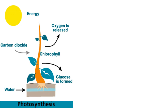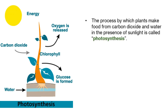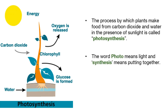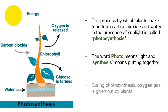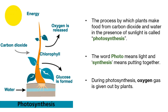So, what did we learn? The process by which plants make food from carbon dioxide and water in the presence of sunlight is called photosynthesis. The word photo means light and synthesis means putting together. During photosynthesis, oxygen gas is given out by the plants.